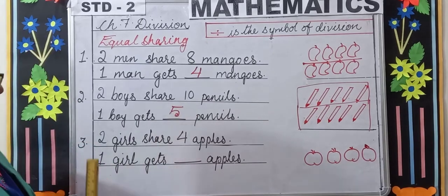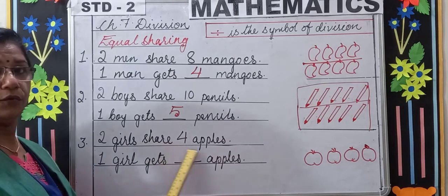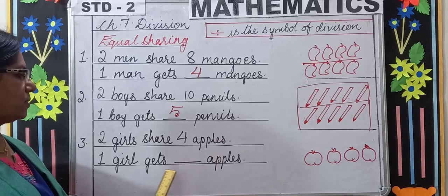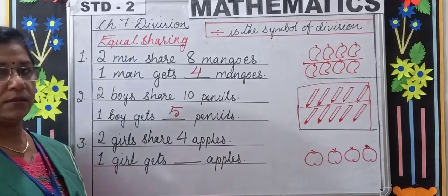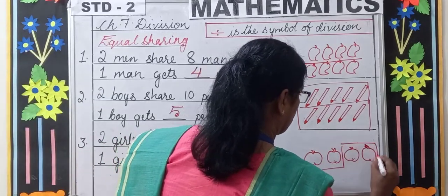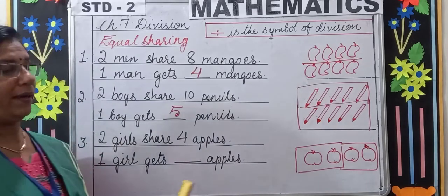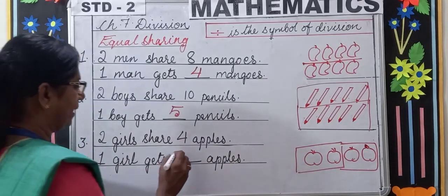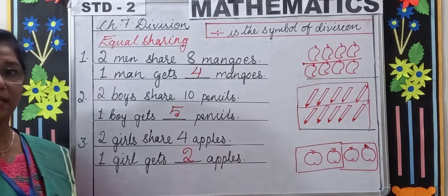Let's do one more example. Two girls share 4 apples. One girl gets how many apples? Here we have 4 apples. We have to group them equally into 2. Each group contains 2 apples, so one girl will get 2 apples. Is that clear, children?